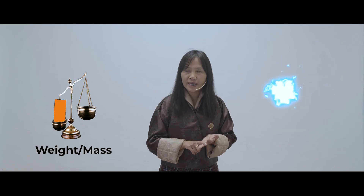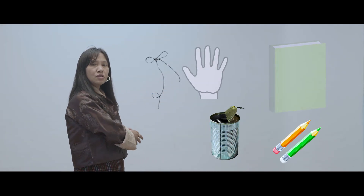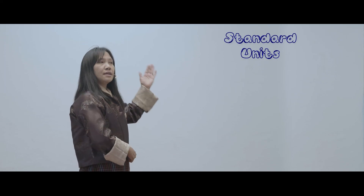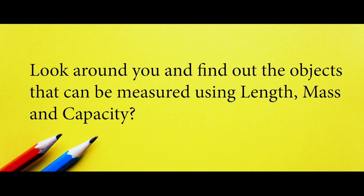Today we have looked at the measurements of mass, capacity, and length using both non-standard units and standard units. We saw pictures of non-standard units used to measure length, weight, and capacity, and standard tools like ruler, measuring tape, and balance. Now look around you and find objects that can be measured using length, mass, and capacity — and don't forget to ask your mother's and father's weight today. Good luck, see you next time!